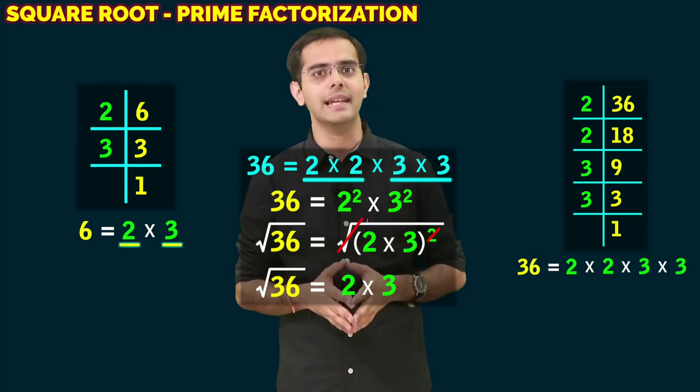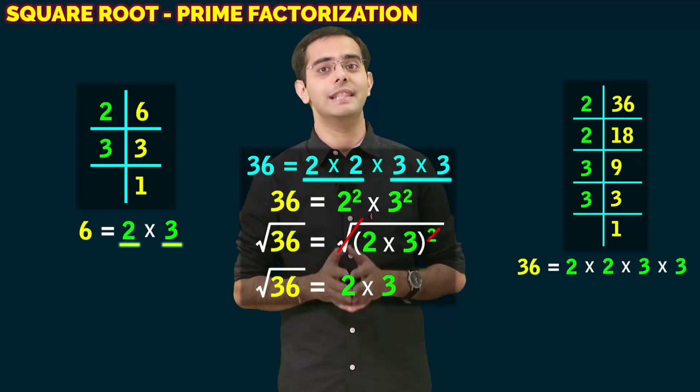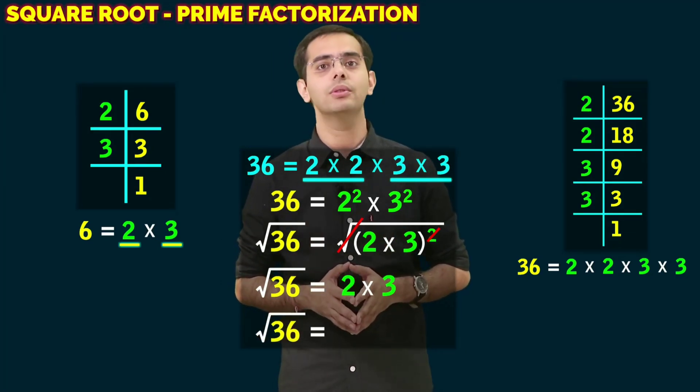Or we can also say that we will take one number from each pair. This gives us √36 = 6.